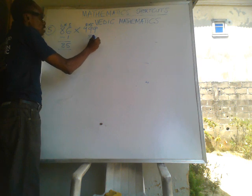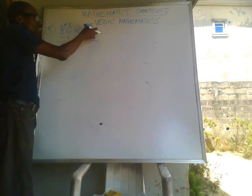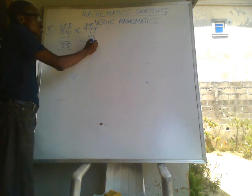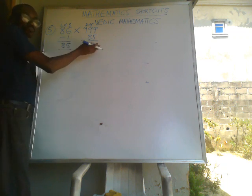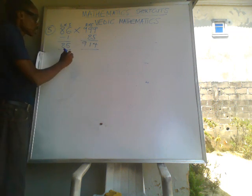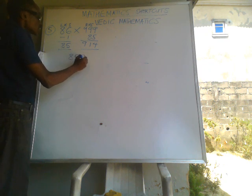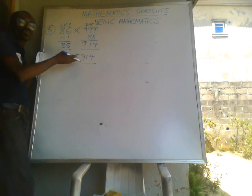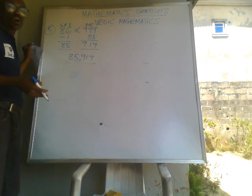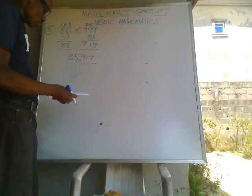We move 85 over to the right hand side and subtract it from 999. So: 9 minus 5 is 4, 9 minus 8 is 1, and the remaining 9 stays as 9. Combining both parts we get 85914. You can confirm this on your calculator — that is your answer.